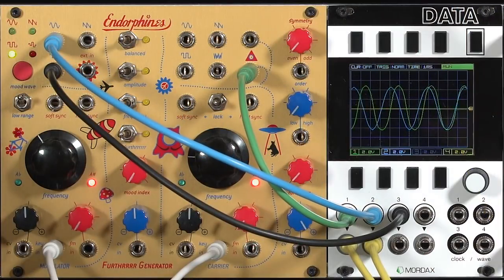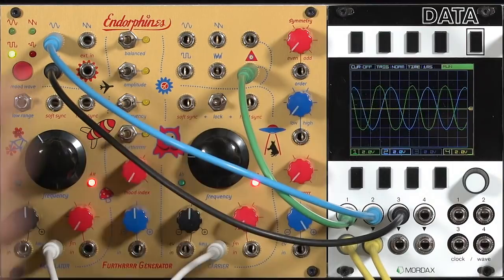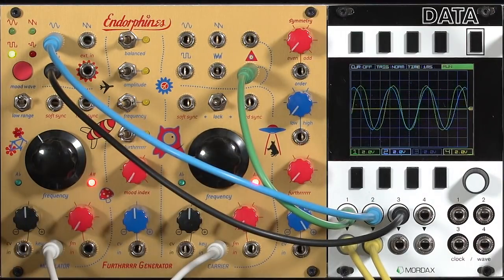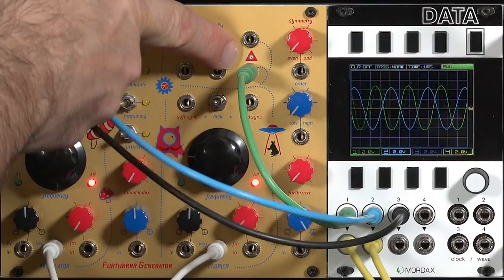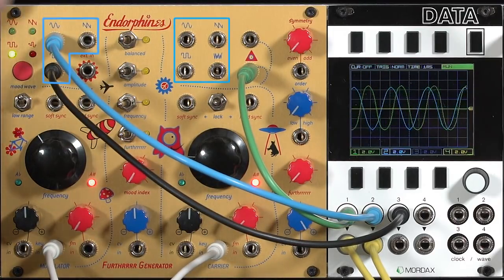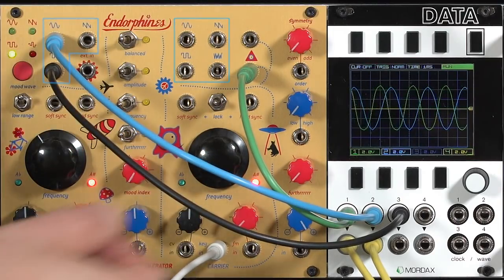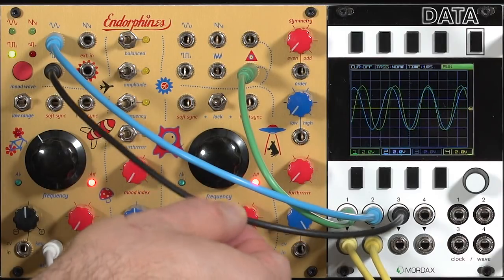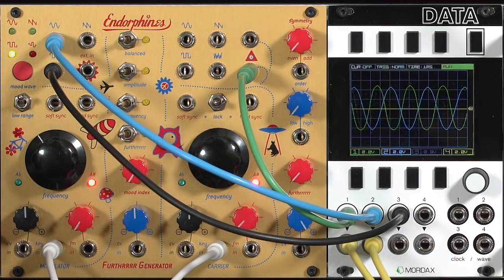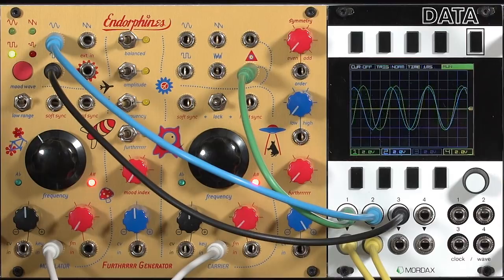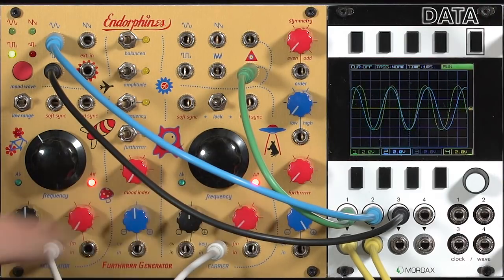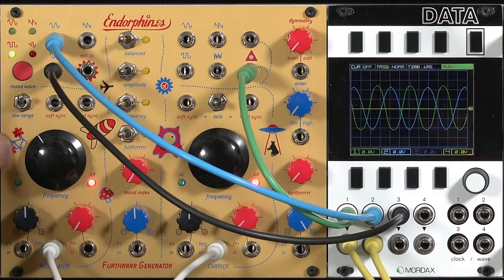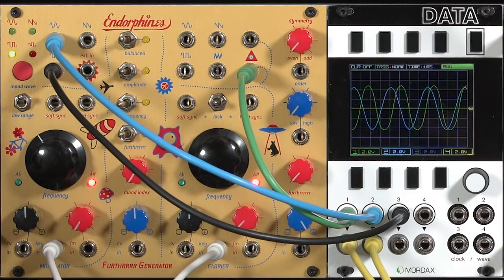The blue cable is the output of my modulation or mood oscillator, and that's the blue waveform over in the data. The green cable is the final output from my carrier oscillator. Since we're going to be modulating the carrier oscillator, I'm syncing off of the modulation oscillator since it's going to be more stable in general.